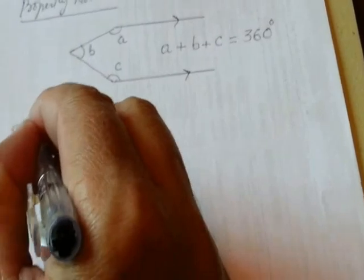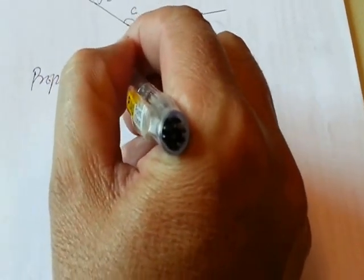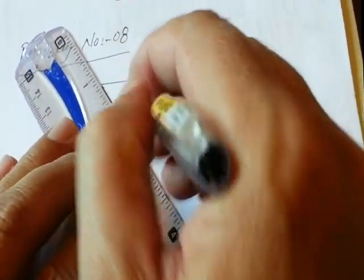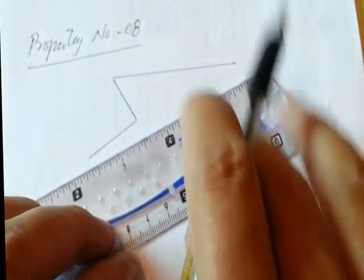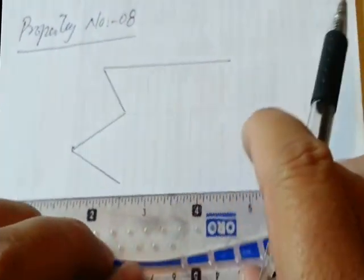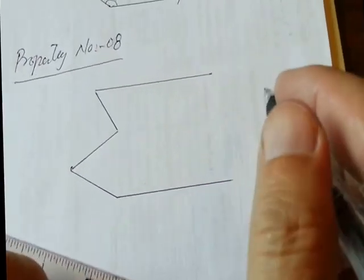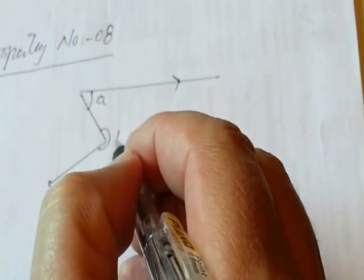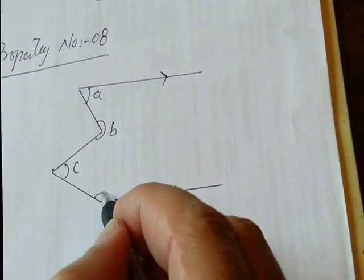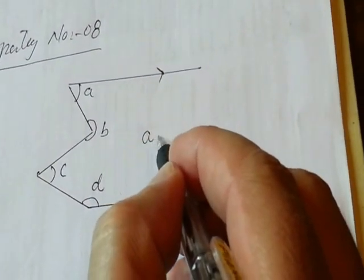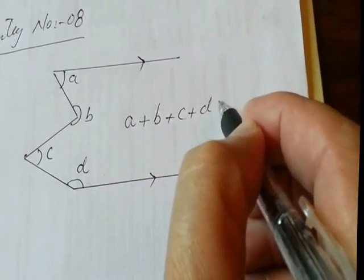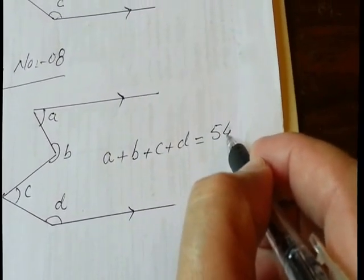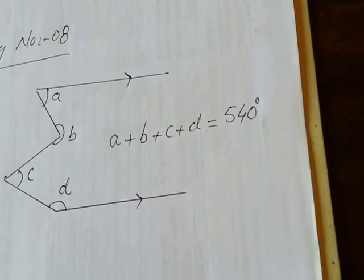Property 8: If there are four angles formed, with two parallel lines — angles A, B, C, and T — the sum of these four angles is equal to 540 degrees.